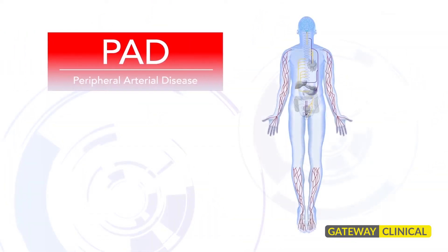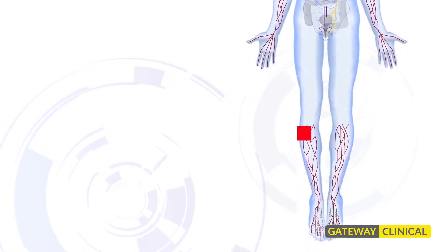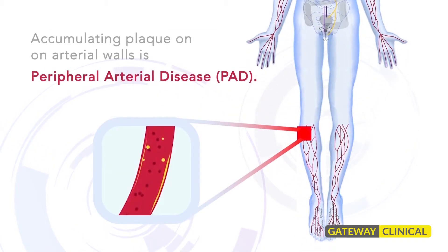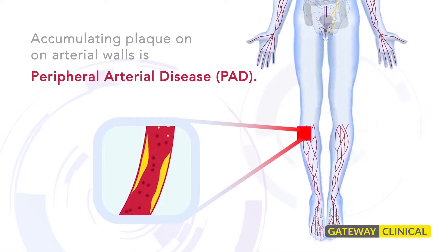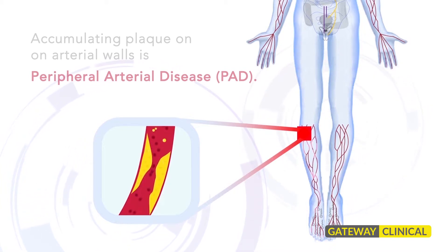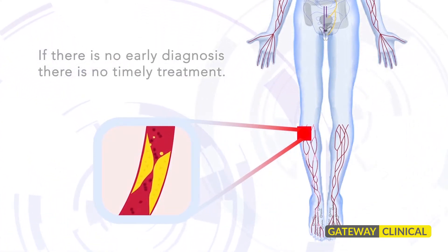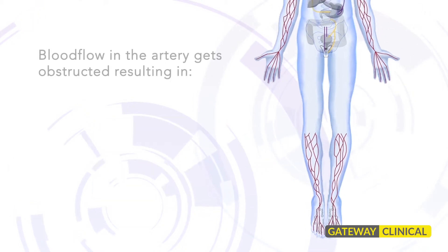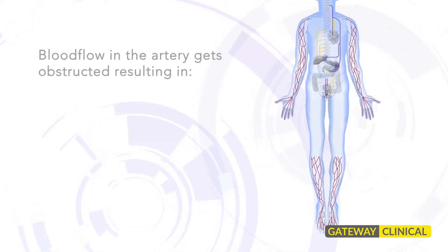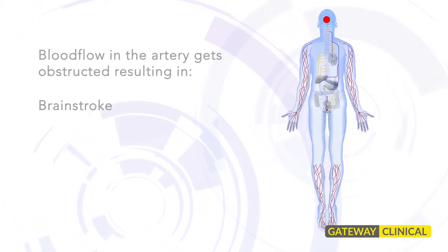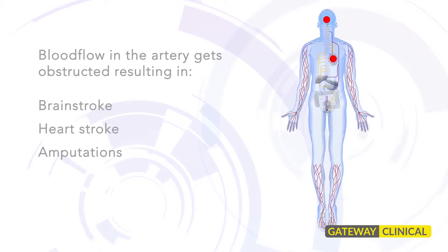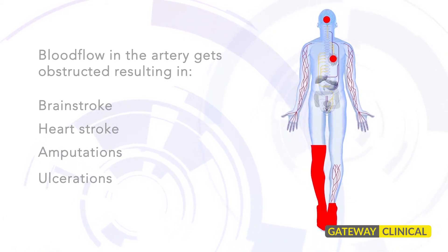Peripheral arterial disease is the accumulation of plaque on arterial walls, also known as PAD. If there is no early diagnosis, there is no timely treatment. Blood flow in the arteries gets obstructed, resulting in brain stroke, heart stroke, amputations, and ulcerations.